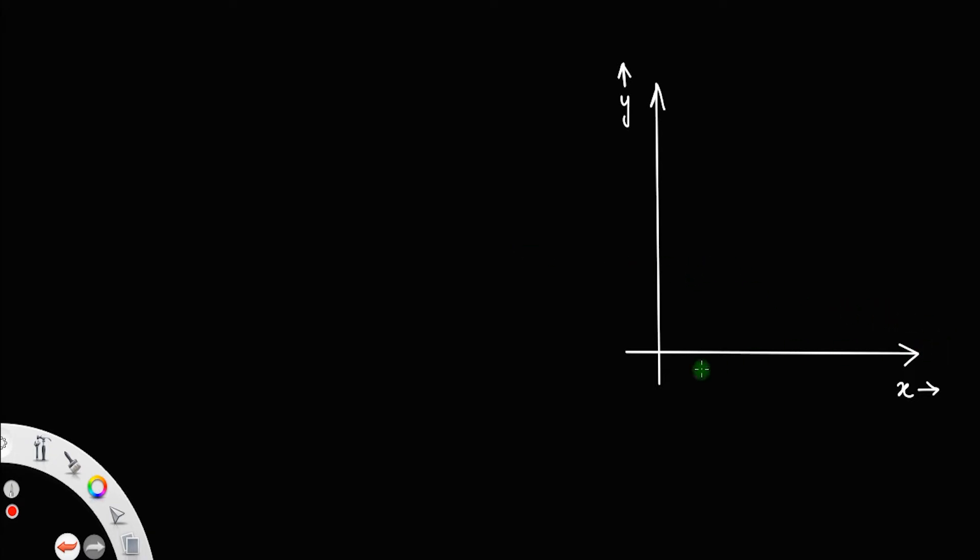For that, let us consider a coordinate axis x and y axis. Let there is a particle at the point A. Let r be the position vector of that point or position vector of that particle.